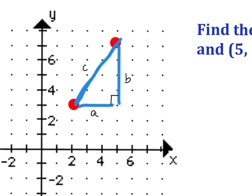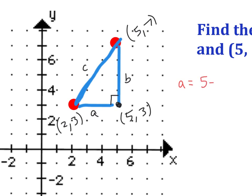Notice that I have a new point here: the point (5, 3). Combine that with the other point at (2, 3) and our point up here at the top, which is at (5, 7).